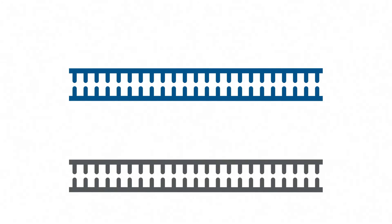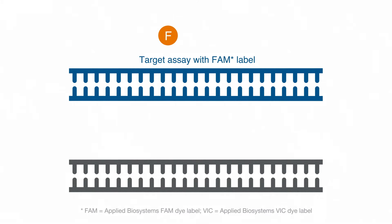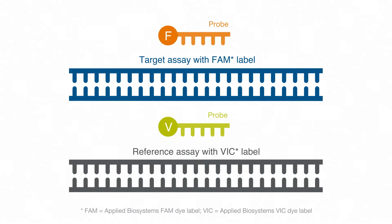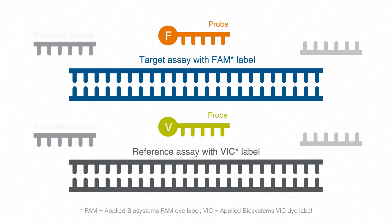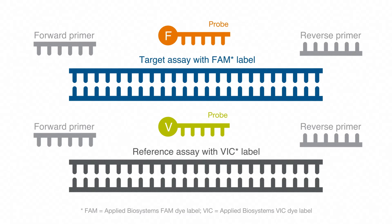How does all this work? TaqMan copy number assays are duplex experiments that use a FAM-labeled target assay and a VIC-labeled reference assay in the same well to quantify small-fold changes. The reference assay targets a gene of known and stable copy number. For example, the RNase P gene is often used as a reference target for human samples, and has been shown to be present and stable at two copies.